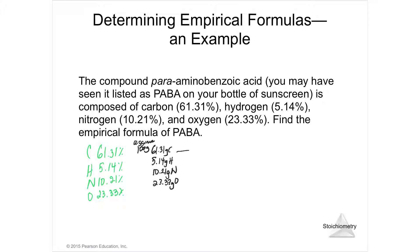The molar mass of carbon, if I look at the periodic table, is 12.01 grams per mole, hydrogen is 1.01 grams per mole, nitrogen is 14.01 grams per mole, and oxygen is 16 grams per mole. Now grams will cancel.